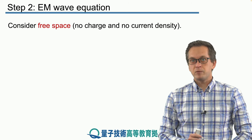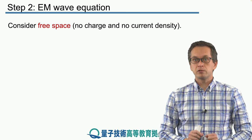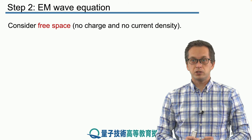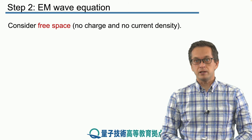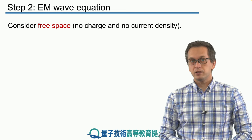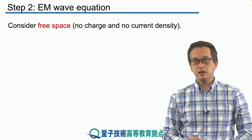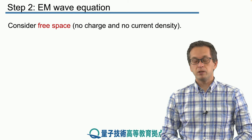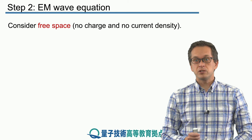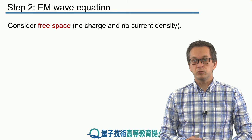In this step we will consider free space, meaning that there are no sources of charges, no sinks of charges, and also no current density. In particular, what that means is that our vector j, the current density, will be zero in Maxwell's fourth equation, and also the divergence of the electric field will be zero.